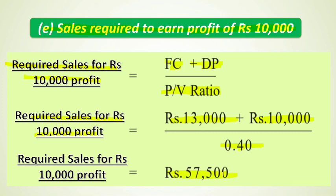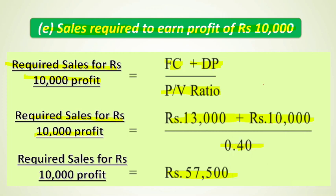Total numerator = ₹13,000 + ₹10,000 = ₹23,000. Dividing ₹23,000 by 0.40 gives ₹57,500. So the sales required to earn a profit of ₹10,000 is ₹57,500.